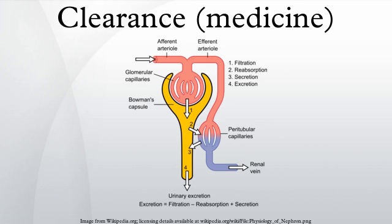In medicine, clearance is a pharmacokinetic measurement of the volume of plasma that is completely cleared of a substance per unit time. The usual units are milliliters per minute. Total body clearance equals renal clearance plus hepatic clearance plus lung clearance. Although for many drugs, clearance is simply considered the renal excretion ability — the rate at which waste substances are cleared from the blood by the kidney — making clearance almost synonymous with renal plasma clearance.